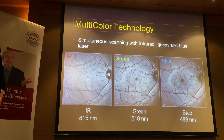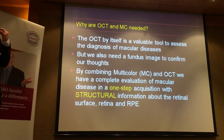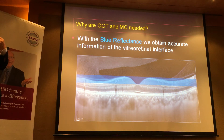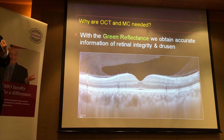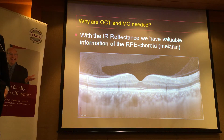These wavelengths allow us to view structures at different layers. Blue reflectance is more superficial — looking for things at the vitreo-retinal interface, such as epiretinal membranes. Green is in between — looking for retinal structures, especially hemorrhages, and dark patches similar to red-free imaging. Infrared penetrates deeper, so we're looking at the RPE and beyond.